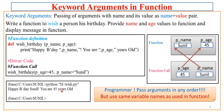Here we get a benefit: the order matters less because we use the actual argument names. Python internally maps p_age to p_age of the function and p_name to p_name of the function. So Sunil is automatically copied to p_name and 45 to p_age. Remember: you can pass arguments in any order, but you must use the same variable names as used in the function definition.